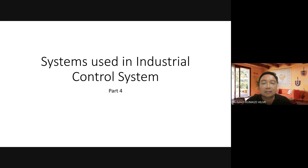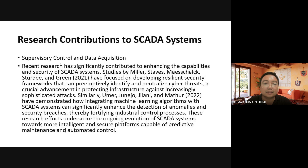The systems I'm going to talk about in this video are the top five systems most frequently mentioned in research about industrial control systems. The first one is the SCADA system. SCADA stands for Supervisory Control and Data Acquisition. Recent research has significantly contributed to enhancing the capabilities and security of SCADA systems. A study by Miller, Steve, and Marshall in 2021 focused on developing resilient security frameworks.